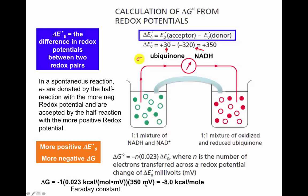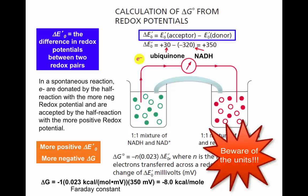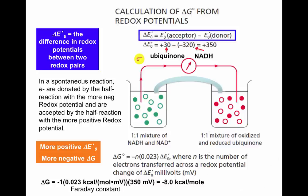In a spontaneous reaction, electrons are donated by the half reaction with the more negative redox potential and accepted by the half reaction with the more positive redox potential. Be careful — the Faraday constant can be used with different units. Instead of 0.023 kilocalories per mole per millivolt, other equations may use kilojoules per mole and volts. Pay attention to the units given in the Faraday constant.